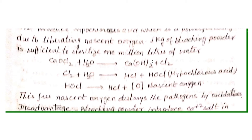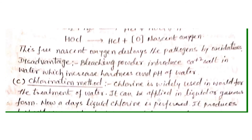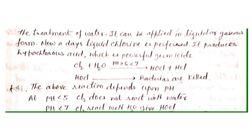When bleaching powder reacts with water, it produces calcium hydroxide plus chlorine. This free chlorine reacts with water to make HCl plus HOCl (hypochlorous acid). The hypochlorous acid then decomposes to make HCl plus nascent oxygen [O]. This nascent oxygen is a powerful oxidizing agent with a very short lifetime, so it destroys all the pathogens or bacteria present in the water. The main disadvantage of this method is it produces calcium salts, which increase the hardness and pH of the water.